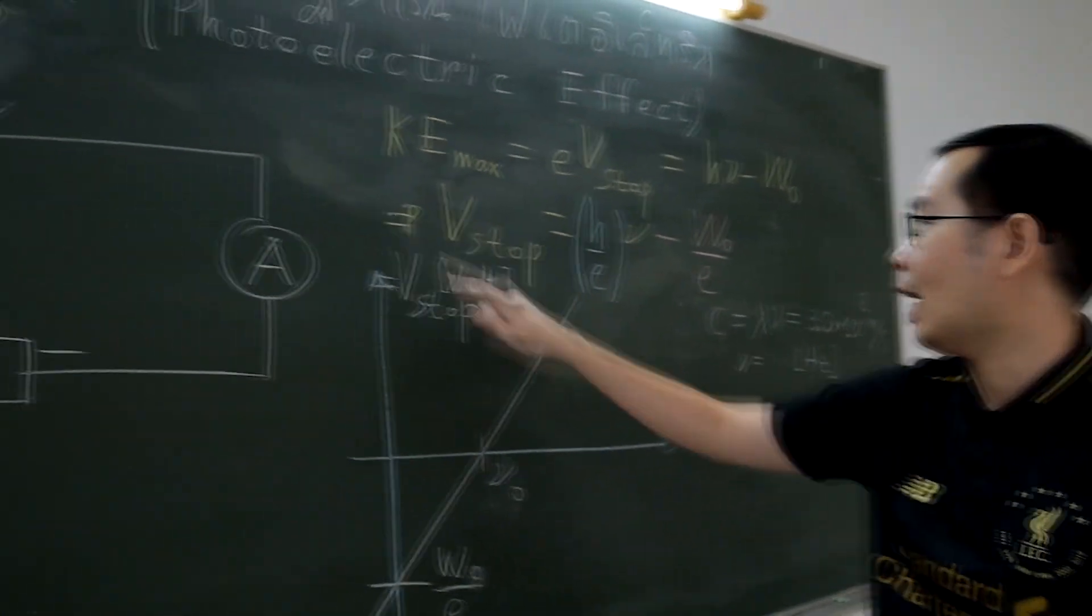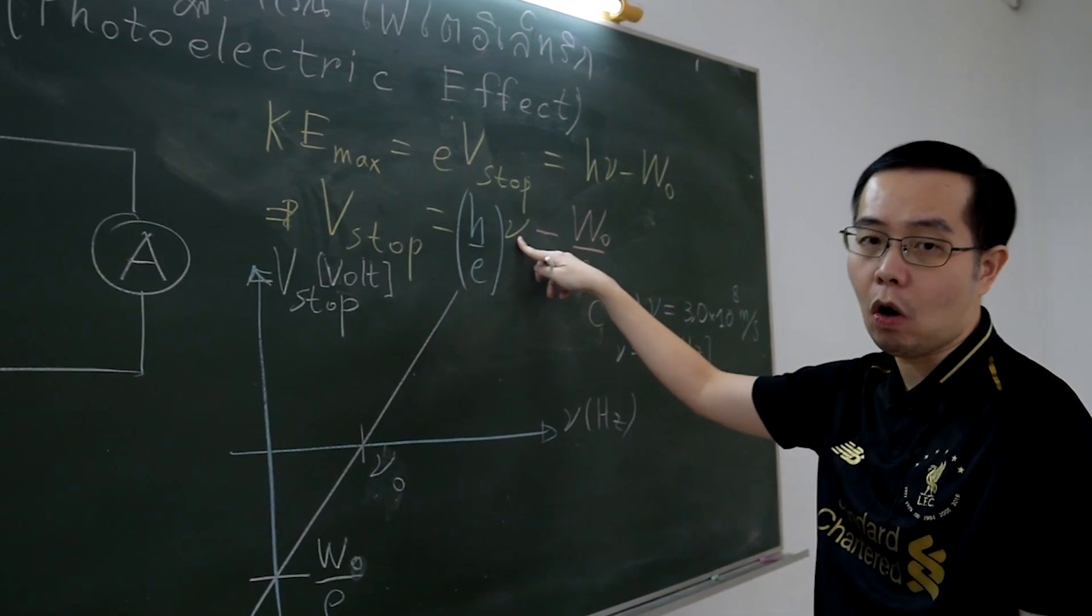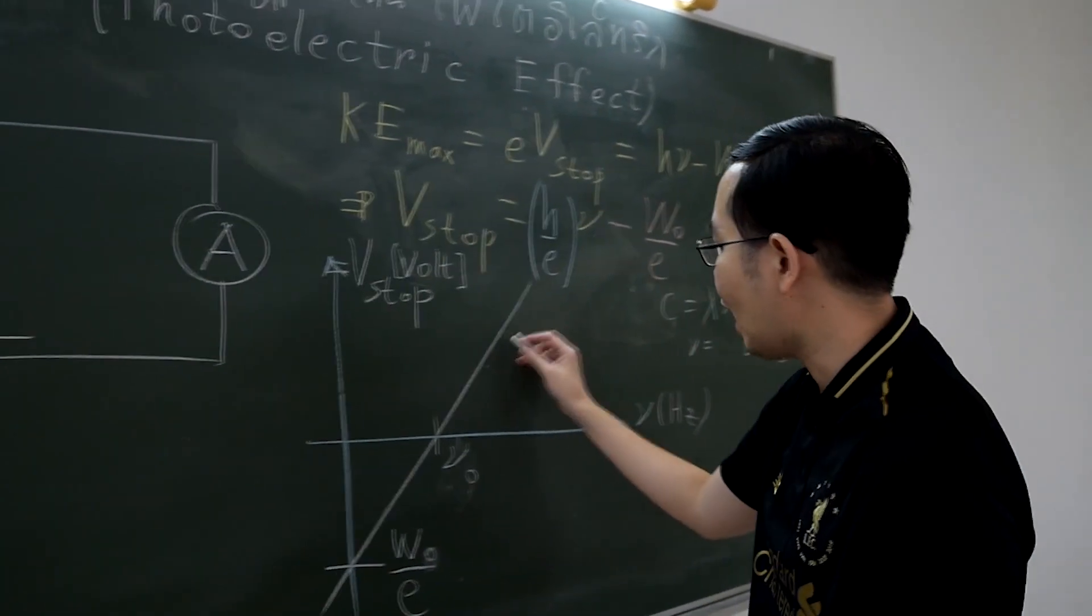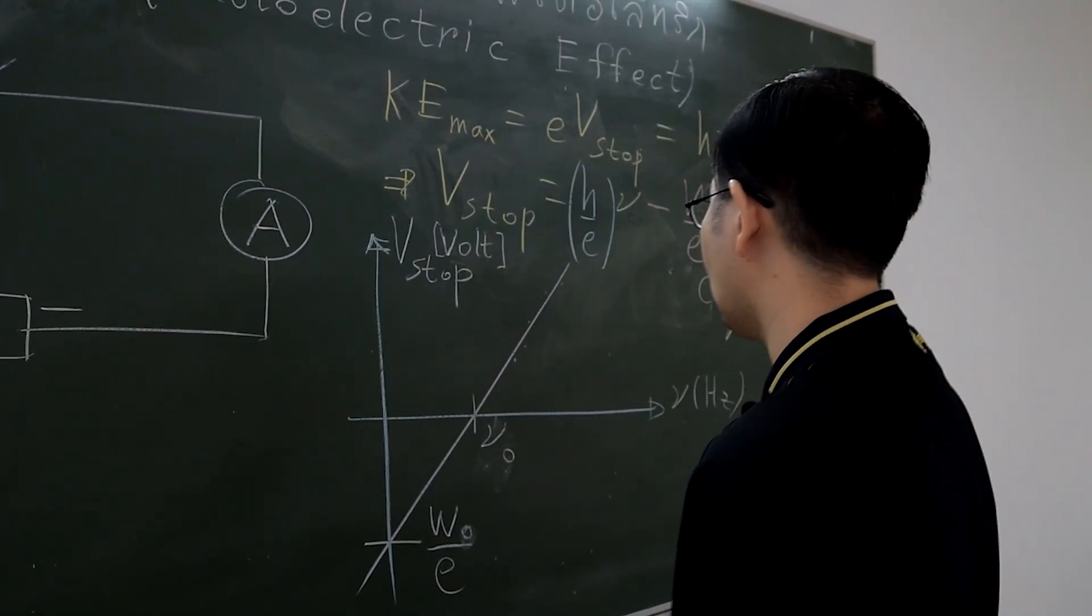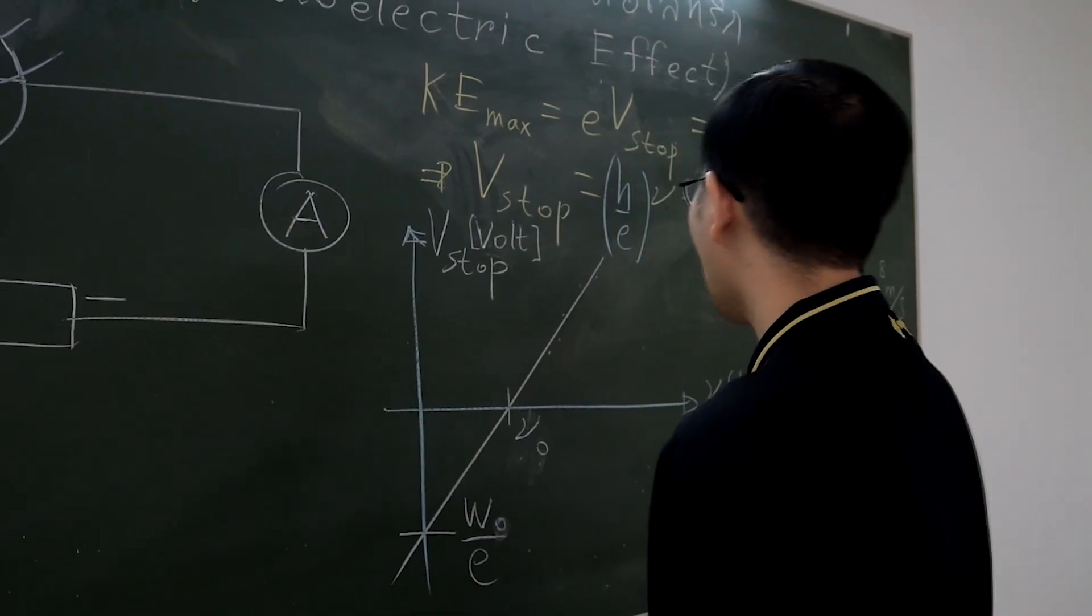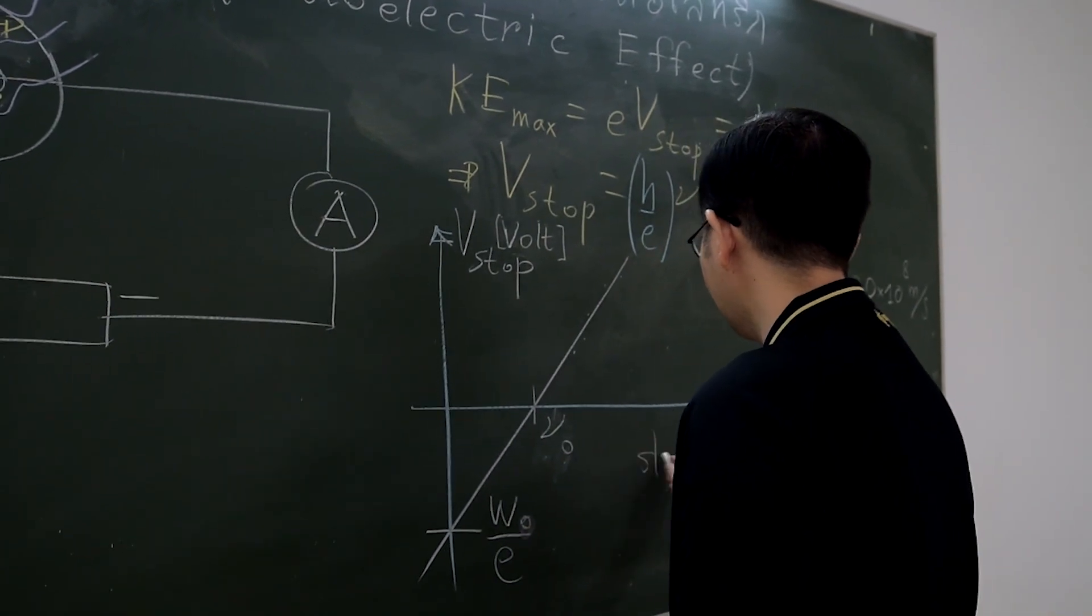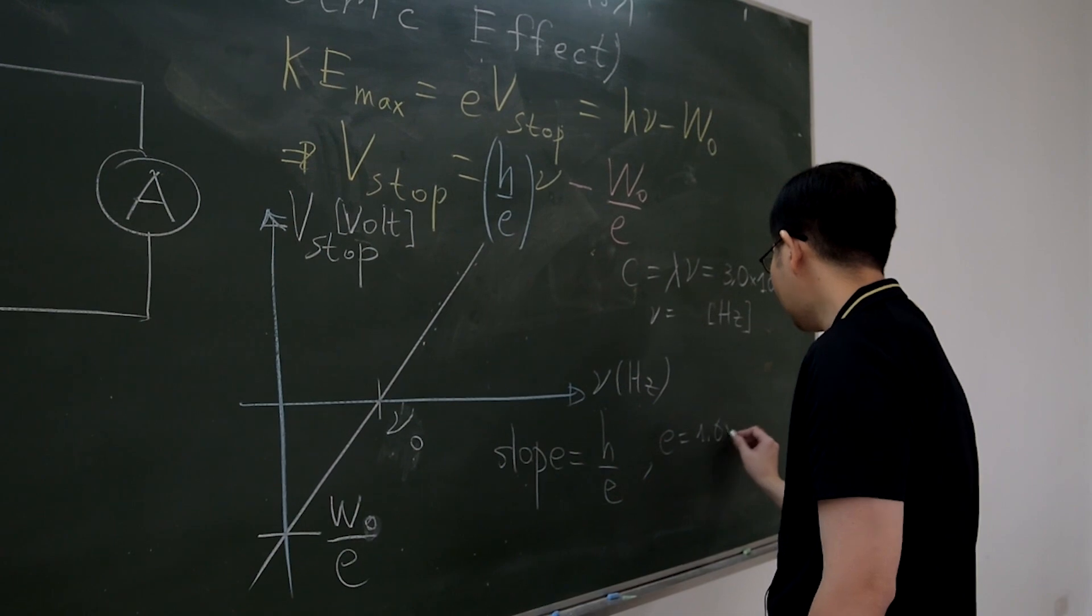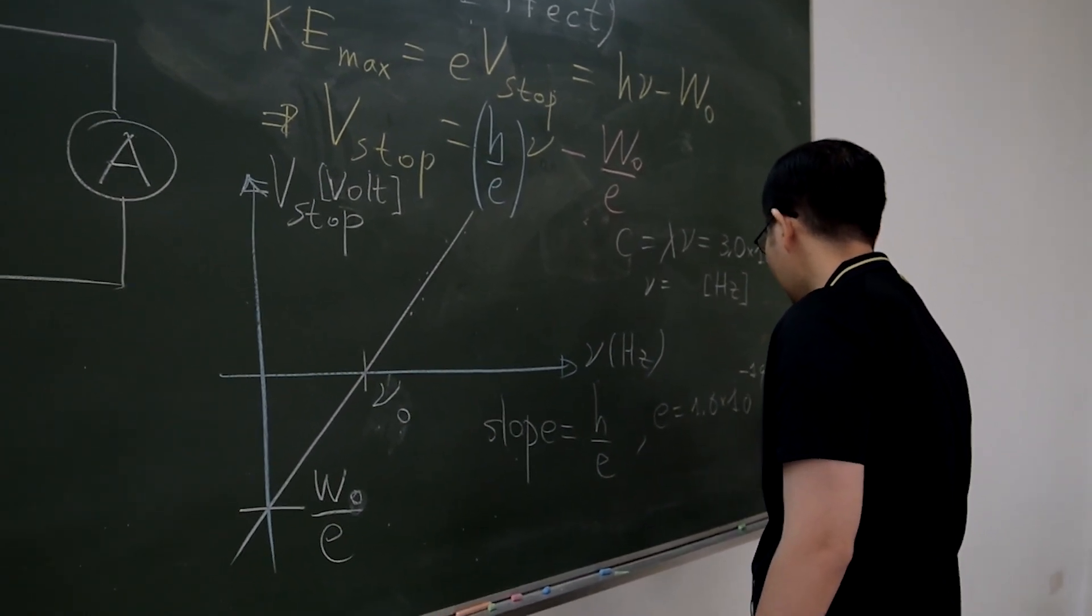From the equation, the y-axis is stopping potential and x-axis is light frequency. Next, we will find the slope of graph line. Do not use the data point to find the slope. Use the estimated straight line that you fit the data. The slope of graph equals Planck's constant divided by the electric charge, which is 1.6 times 10 to negative 19th coulomb.